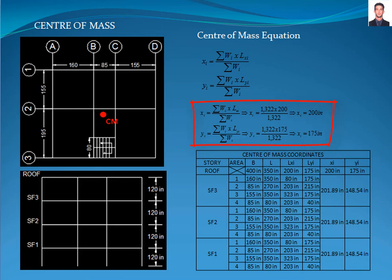The center of mass of the roof story is at the coordinates x 200 inches and y 175 inches. In this frame are the rest of the coordinates of the center of mass for each story.